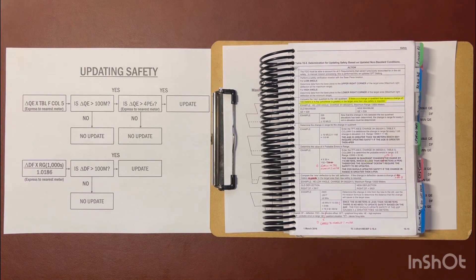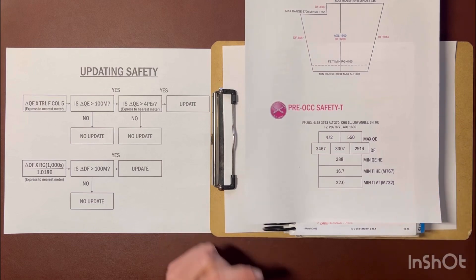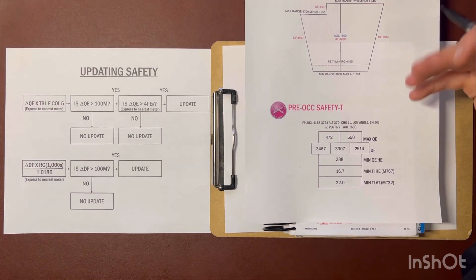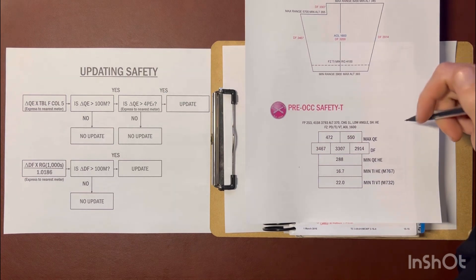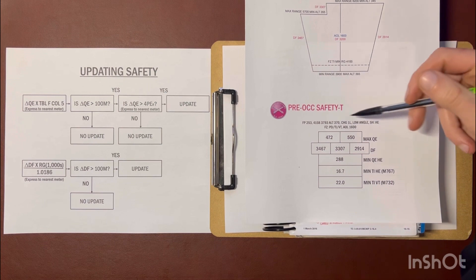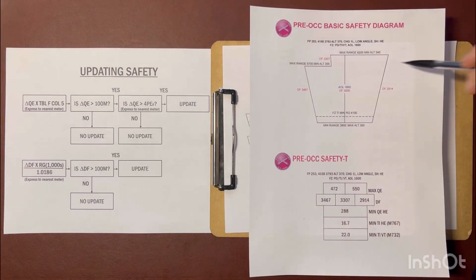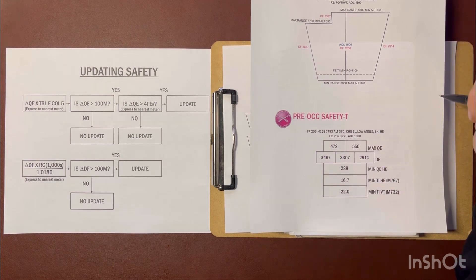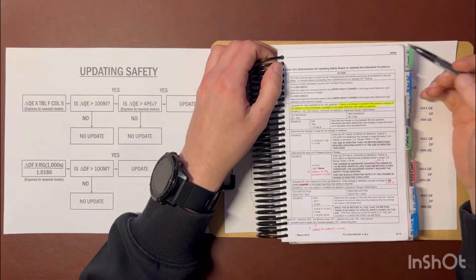The idea behind this is: if I do pre-occupation safety before I go to the field, I do my computations and get a pre-occ safety T. Once I occupy my firing position and I'm accounting for all five requirements — updated MET, updated PropTemp, MVVs — basically I have a GFT setting; I'm not calculating data under standard conditions anymore. I may not necessarily want to go back through and do all the math to calculate post-occupation safety. So what I have the ability to do is pick a specific point on my basic safety diagram to recalculate data, then look at the difference between the data on my old safety T and the new data that accounts for those five requirements.